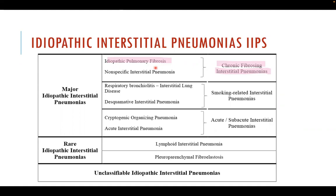Other connective tissue diseases prefer to present with non-specific interstitial pneumonia, like scleroderma and systemic lupus erythematosus. Idiopathic interstitial pneumonia belongs to the major idiopathic interstitial pneumonia group, which includes chronic fibrosing interstitial pneumonias — either idiopathic pulmonary fibrosis or non-specific interstitial pneumonia. A separate flashcard will cover this group in detail.